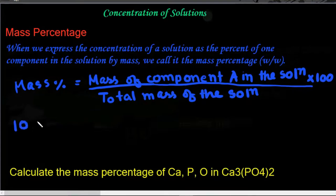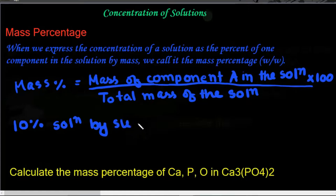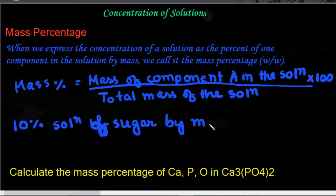When we say a 10% solution of sugar by mass, it implies that 10 grams of sugar is present in 100 grams of solution, or we can say that 10 grams of sugar has been dissolved in 90 grams of water.